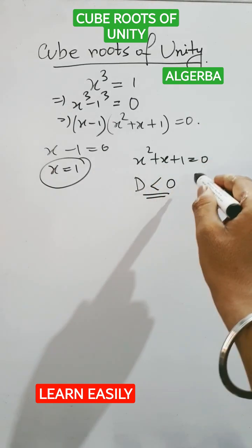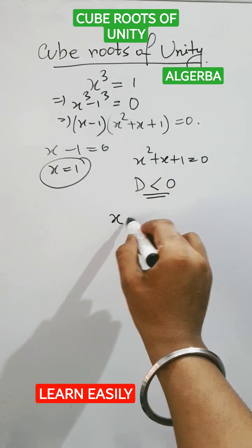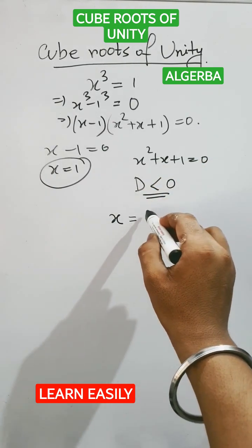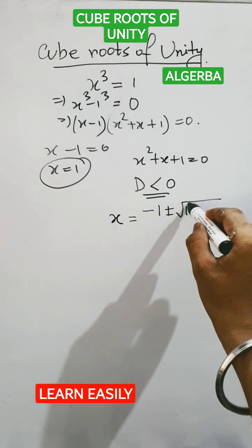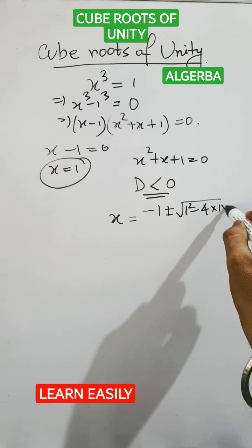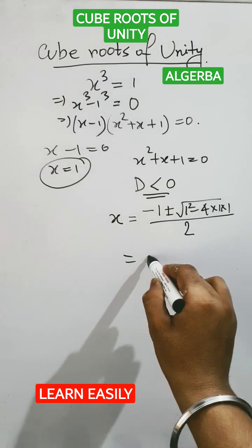That is, x is equals to minus b, that is minus 1, plus minus root over b² - 4ac by 2. That is minus 1 plus minus root over minus 3 by 2.